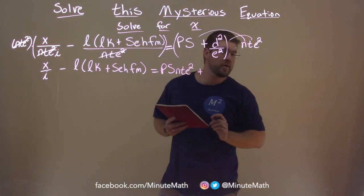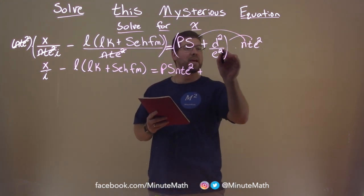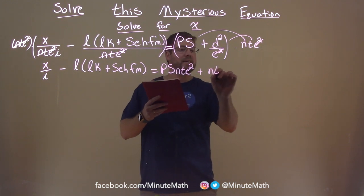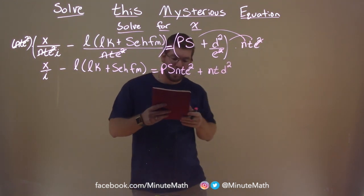To the d squared over e squared. The e squared will cancel out somewhat. And now we're left with nt d squared.